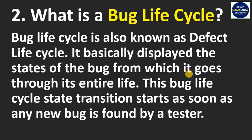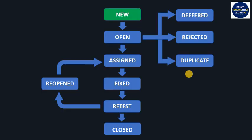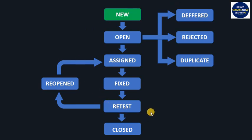Let's see all the states in the bug life cycle. This is the bug life cycle flowchart. We have: New, Open, Assigned, Fixed, Retest, Closed, Reopened, Deferred, Rejected, and Duplicate. All of these are states of a bug.